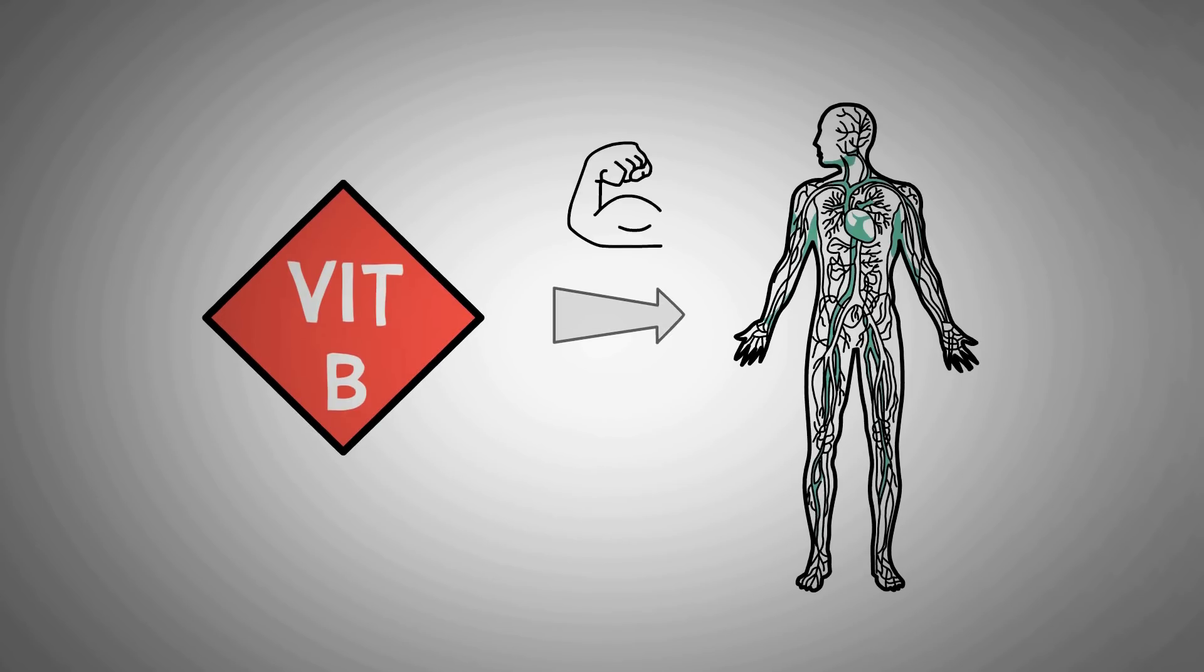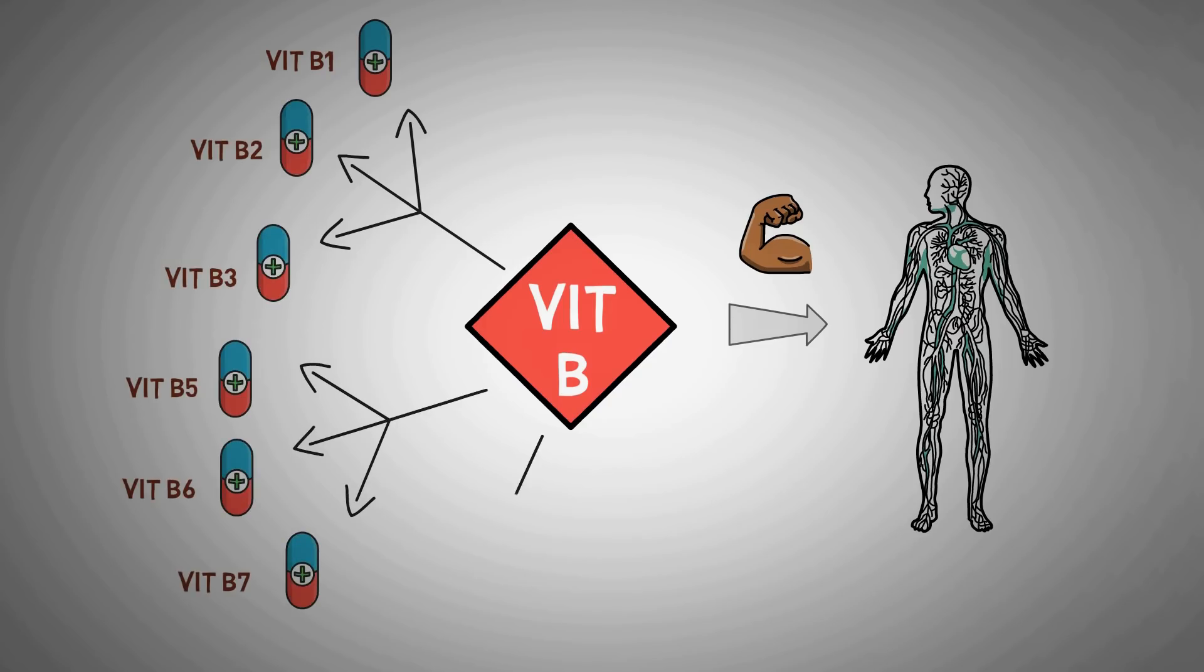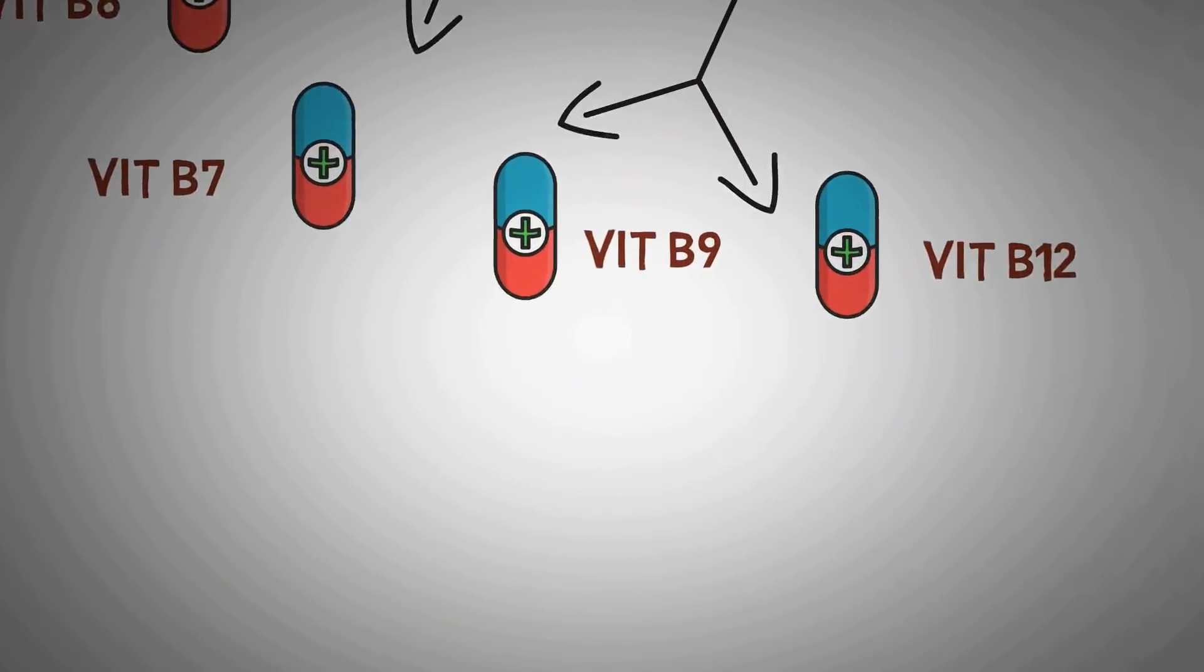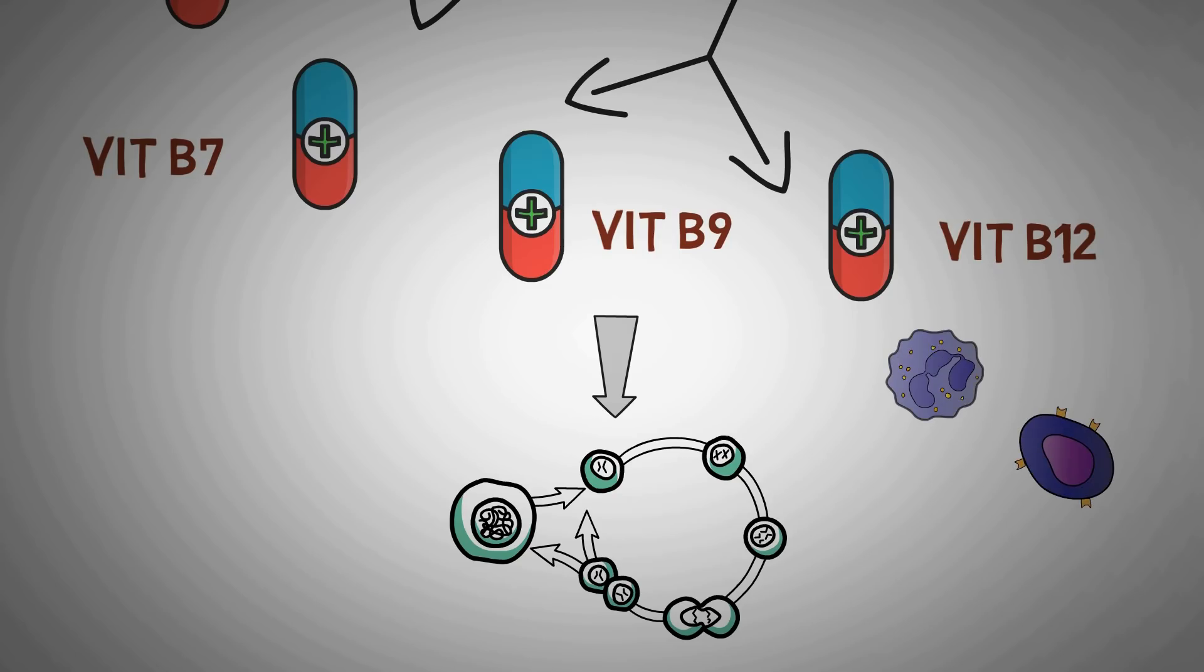Vitamin B strengthens the immune system. Vitamin B is not just a single vitamin, rather a complex of 8 vitamins that have numerous roles in our immune system. For example, folate or vitamin B9 promotes the production and function of white blood cells. Vitamin B12 or cobalamin is also essential for the production of immune cells.